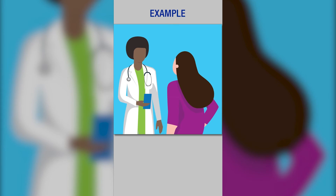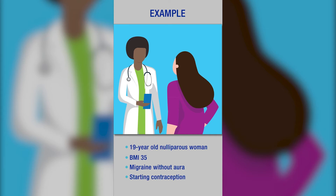Let's talk through a hypothetical patient to demonstrate how to use the app in a clinical setting. A 19-year-old nulliparous woman with a BMI of 35 and migraine without aura comes to your office for a wellness visit. She is interested in starting contraception and is considering birth control pills because she has used them before.